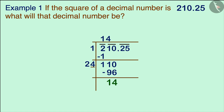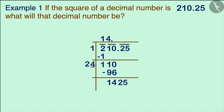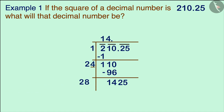The remainder we get here is 14. We are now left with only the decimal part from the original number, so we add a decimal point to the quotient. We then write the next pair of decimal digits alongside the remainder to form our new dividend.